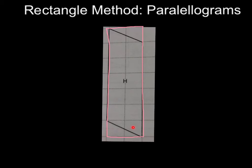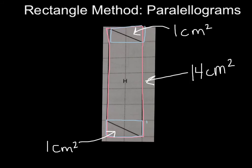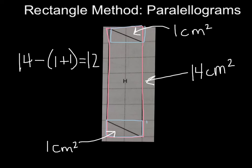Next, I am going to draw two more rectangles and find the area of those so I can subtract the excess and find the area of the entire parallelogram. The area of each of these rectangles is two square centimeters. Half of two is one, so the area of the excess is one square centimeter on each side. Now I'll create an equation: 14 minus 1 plus 1 equals — one plus one is two, and 14 minus 2 is 12. So the total area of parallelogram H is 12 centimeters squared.